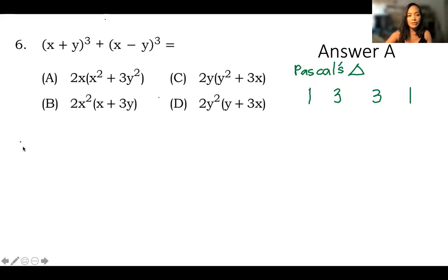For example, we have here x plus 3 raised to 3. What we will do is we first write the numbers. So 1, 3, 3, 1. And then we write x. So first x, x that is raised to 3 because our highest degree of power is 3. And then it will go lower x squared. Then x until we don't have any x anymore.